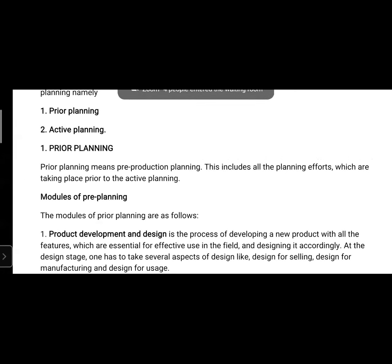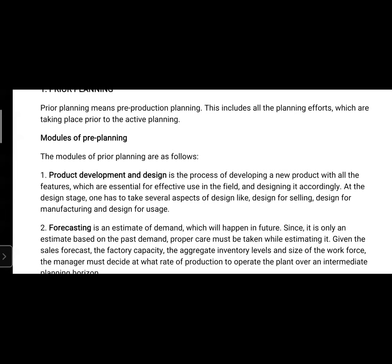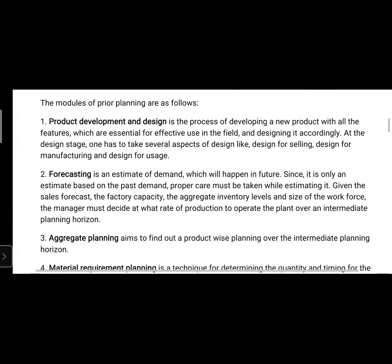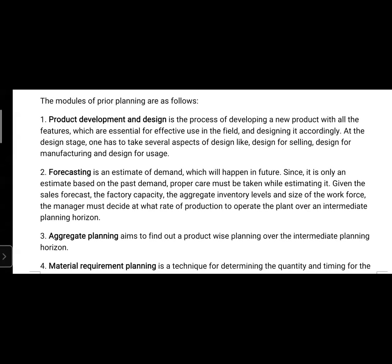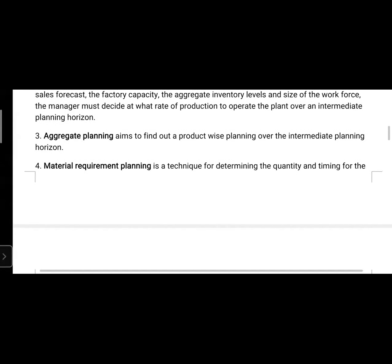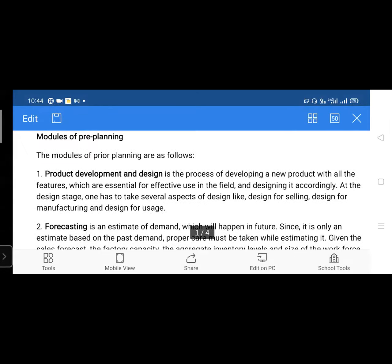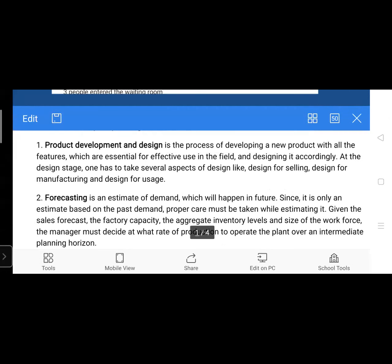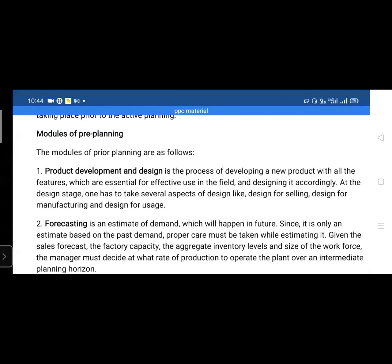Prior planning means pre-production planning. It includes all planning efforts prior to active planning. The modules of prior planning are: product development and design, forecasting, aggregate planning, and material requirement planning (MRP).